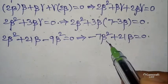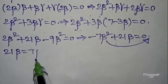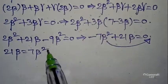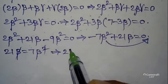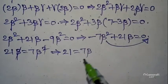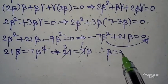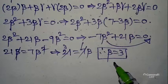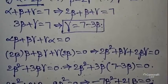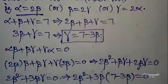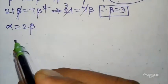From -7*beta² + 21*beta = 0, we get 21*beta = 7*beta². Dividing both sides by beta (beta ≠ 0): 21 = 7*beta. Dividing by 7: beta = 3. Now substituting beta = 3 into alpha = 2*beta: alpha = 2*3 = 6.